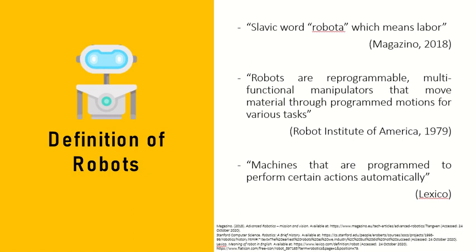The term robot was derived from the Slavic word robota, which means labor. According to the Robot Institute of America, robots are reprogrammable, multifunctional manipulators that move material through program motions for various tasks. Simply put, robots are machines that are programmed to perform certain actions automatically.